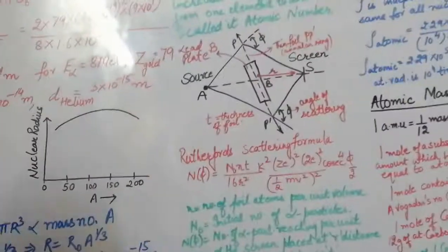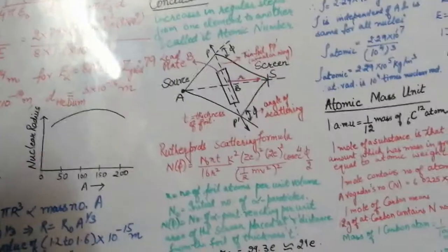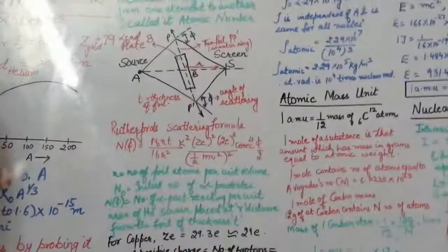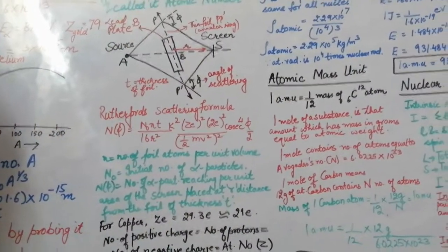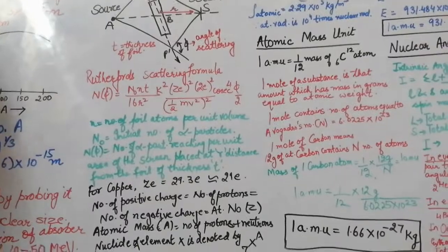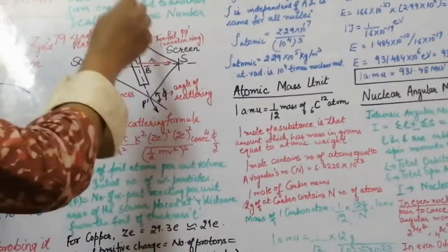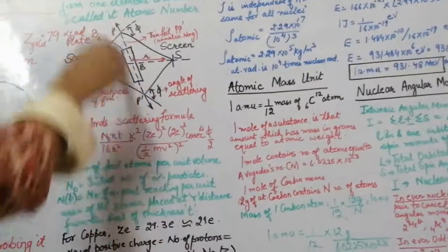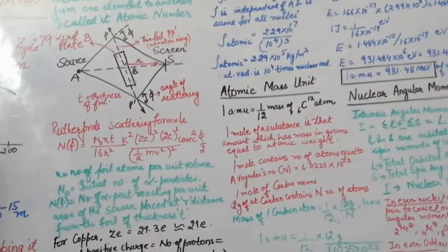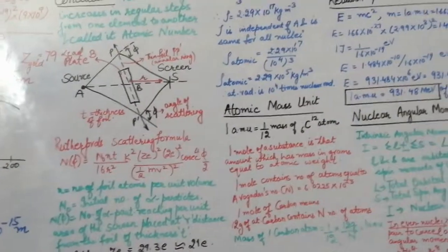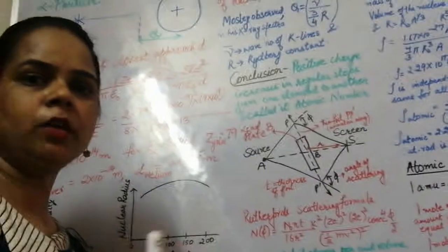Chadwick then performed an experiment to calculate the nuclear charge. He took a source emitting alpha particles directed at a thin copper target foil in the shape of an annular ring, labeled PP'. A fluorescent screen S was used to observe the scintillations of particles reaching it. The source A and the screen S were placed along the same line, with the axis AP equal to PS, and the axis AP' equal to P'S. A lead plate B was used to shield the particles striking the thin foil.